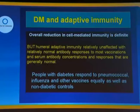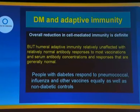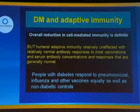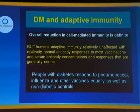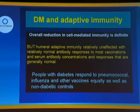On the other hand, adaptive immunity appears to be relatively unaffected. This is of particular importance because it means there are relatively normal antibody responses to vaccinations in most cases. Serum antibody concentrations and responses are generally normal. As a result, people with diabetes respond to pneumococcal, influenza, and other vaccines equally as well as non-diabetic controls — an important practical point to remember.